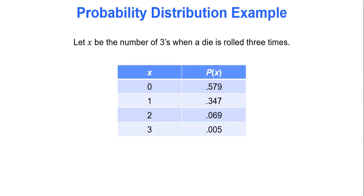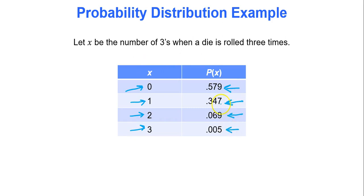Here's an example: let x be the number of 3's when a die is rolled 3 times. The possible values are 0, 1, 2, or 3, giving four probabilities to calculate. This is a valid probability distribution because all probabilities are between 0 and 1, and the probabilities add up to 1. That's very important — the probabilities must add up to 1.